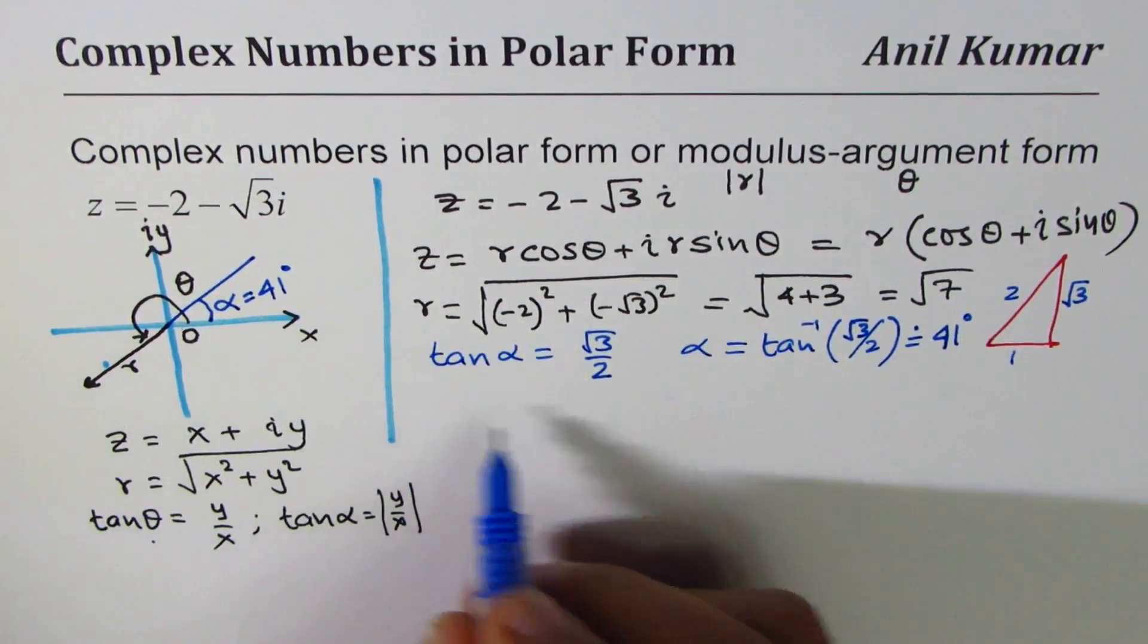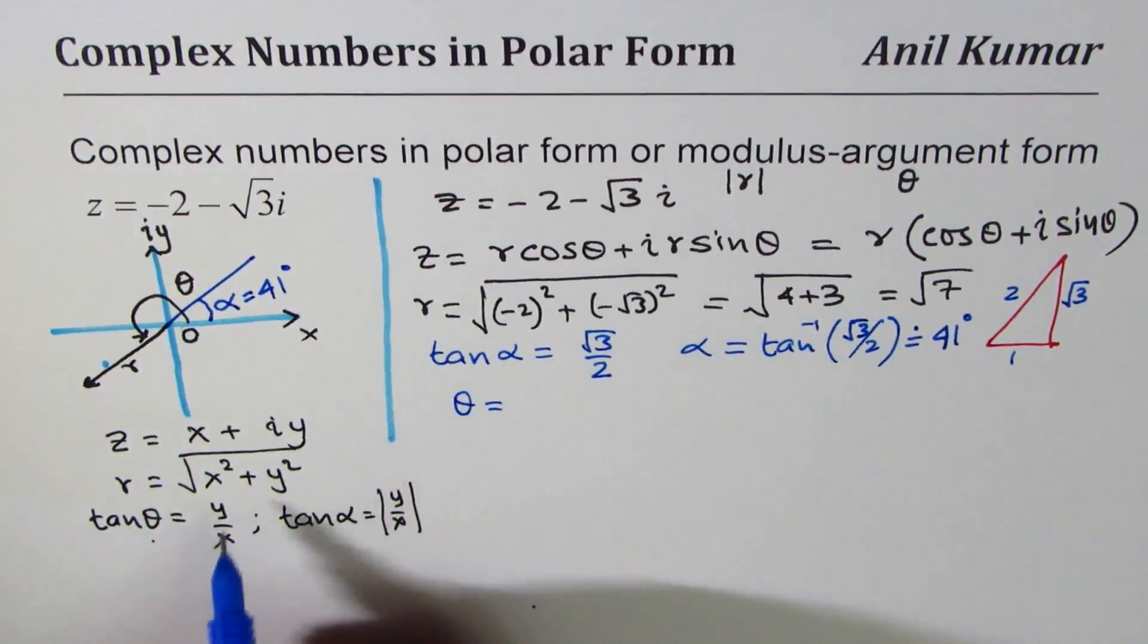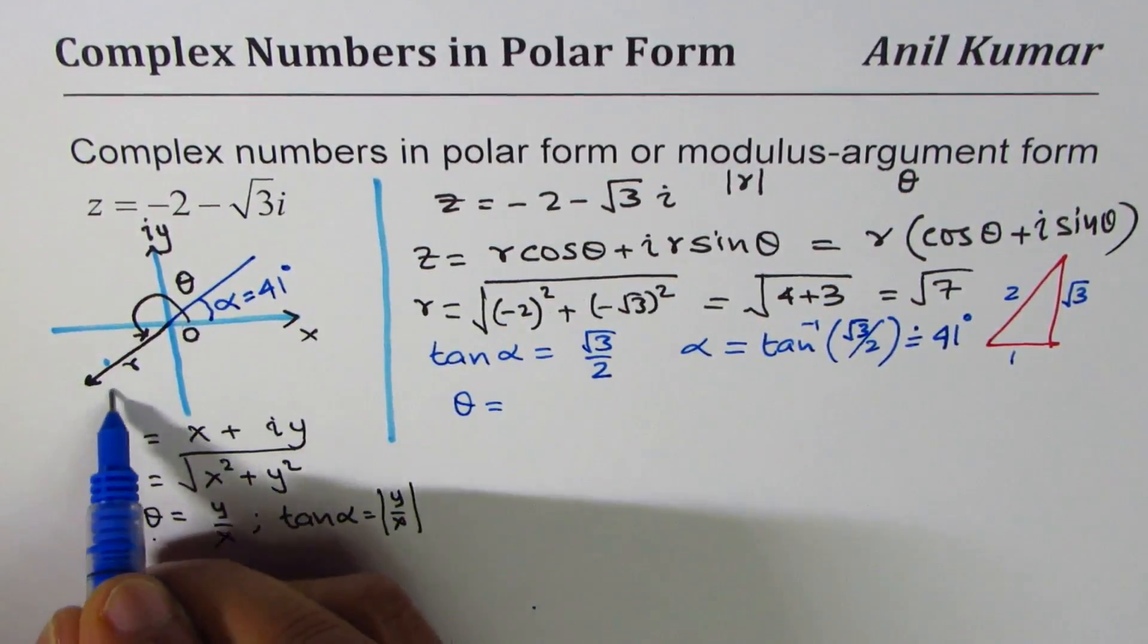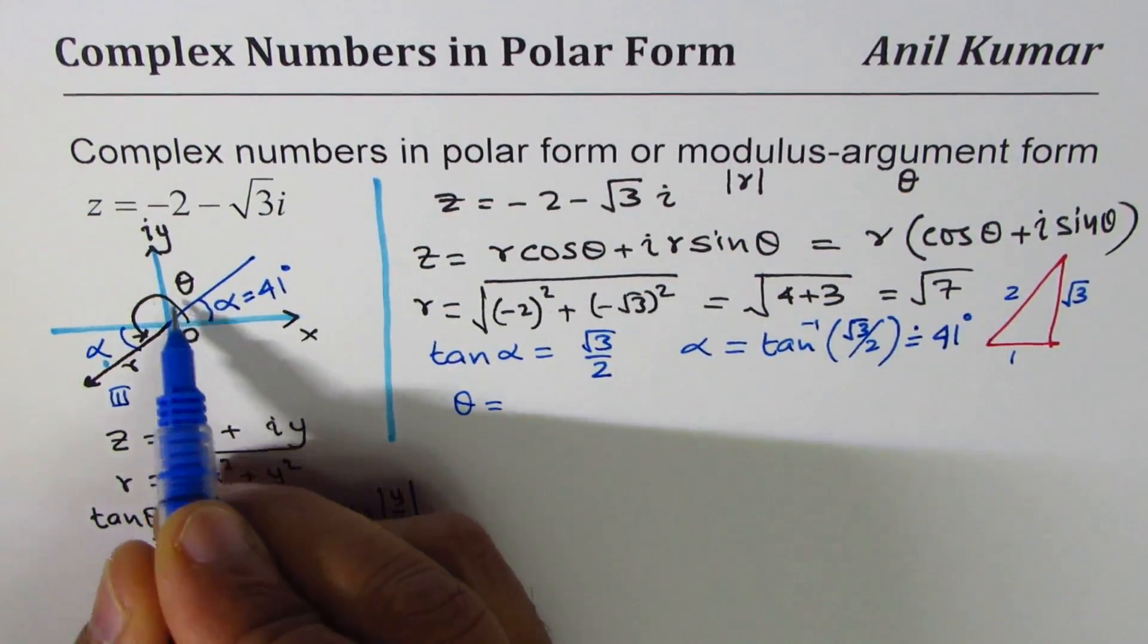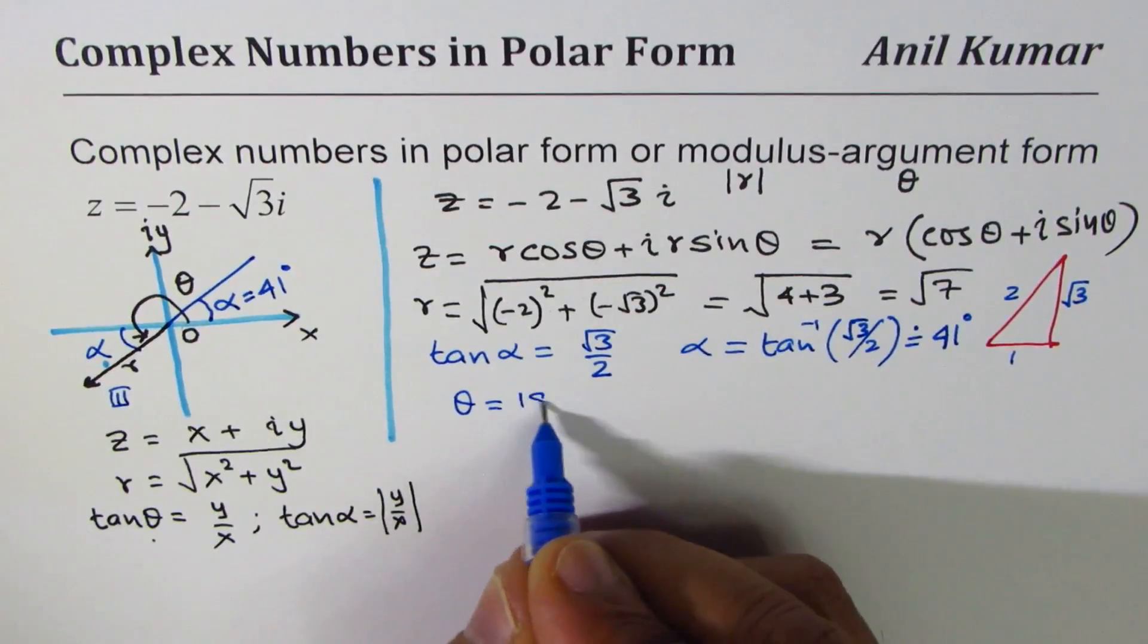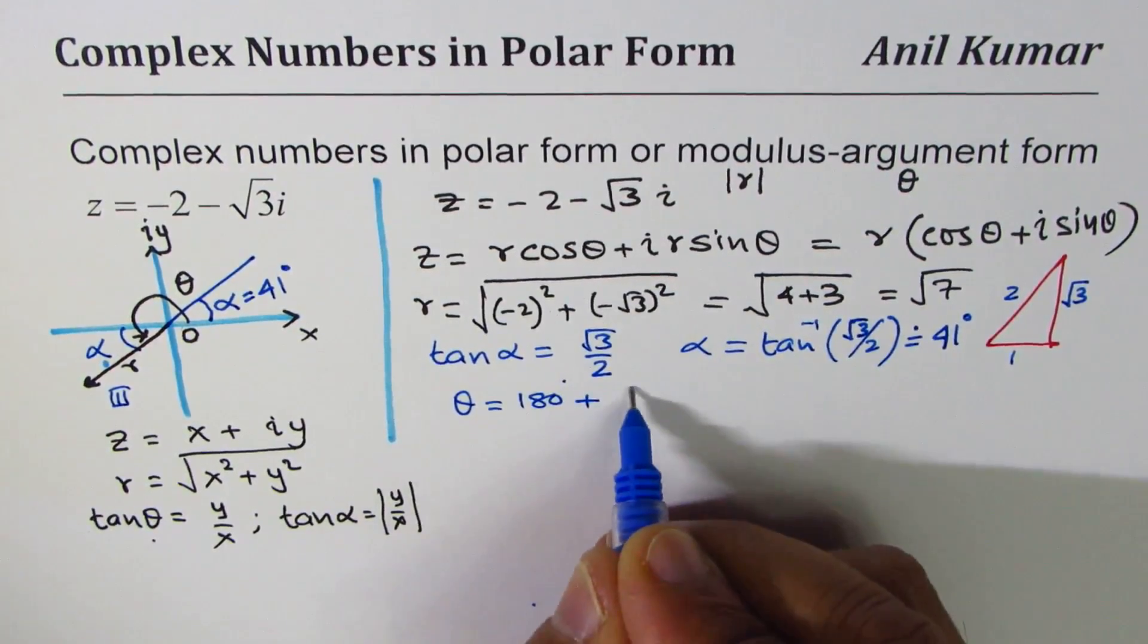So we know this angle. However, that is the α acute angle. What is θ equal to? If you are in quadrant 3, you can clearly see this is α, so it is 180° plus α.